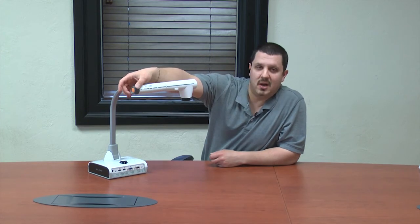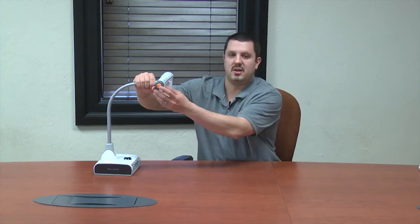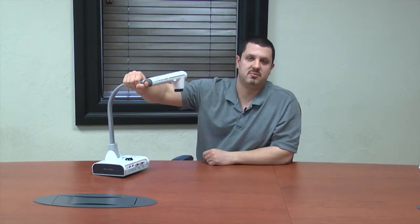Over here, this gray knob is the zoom. Just push it back and forth. And the little orange button in the center is your autofocus. You just press that, focuses the image, takes about two or three seconds.